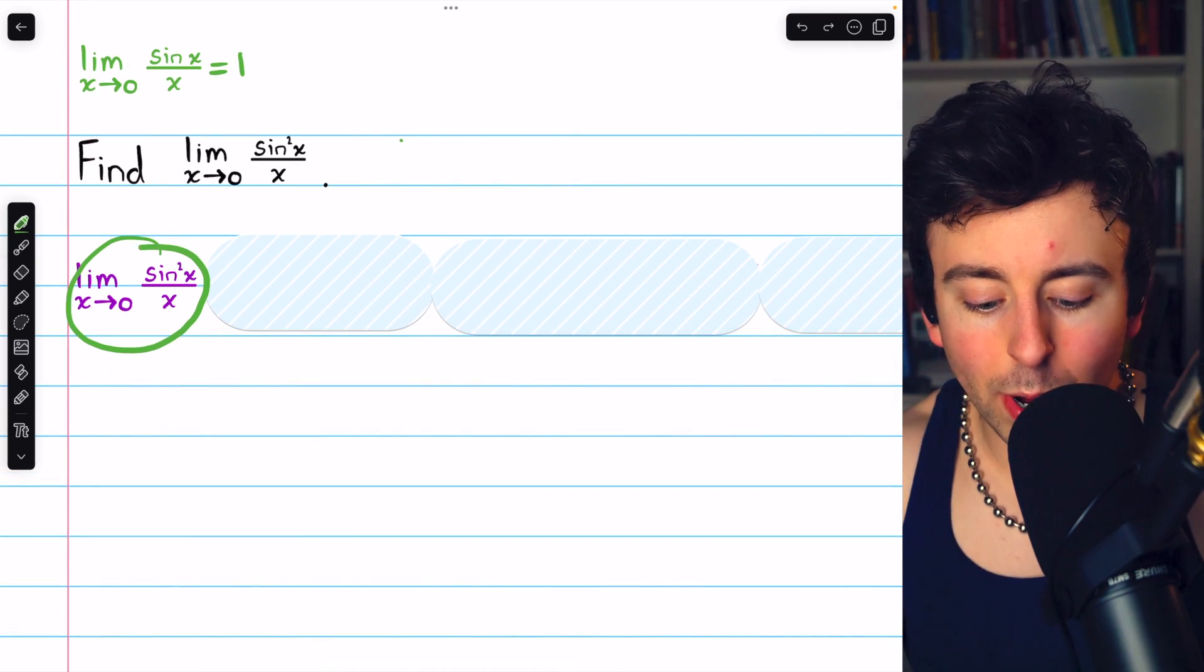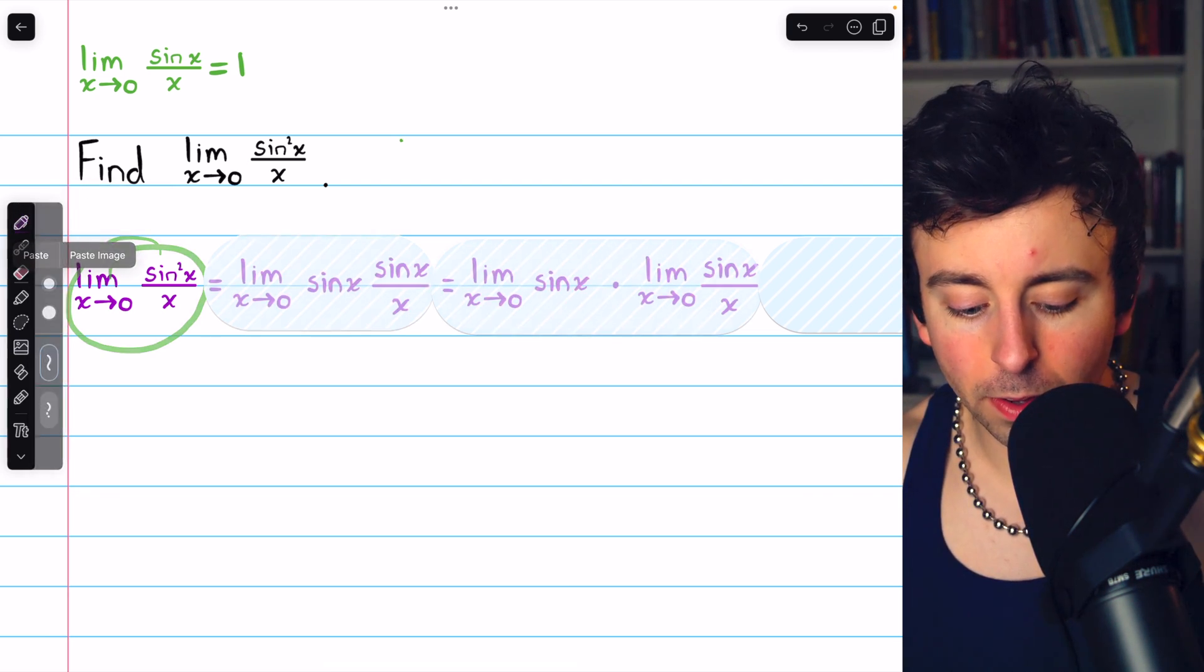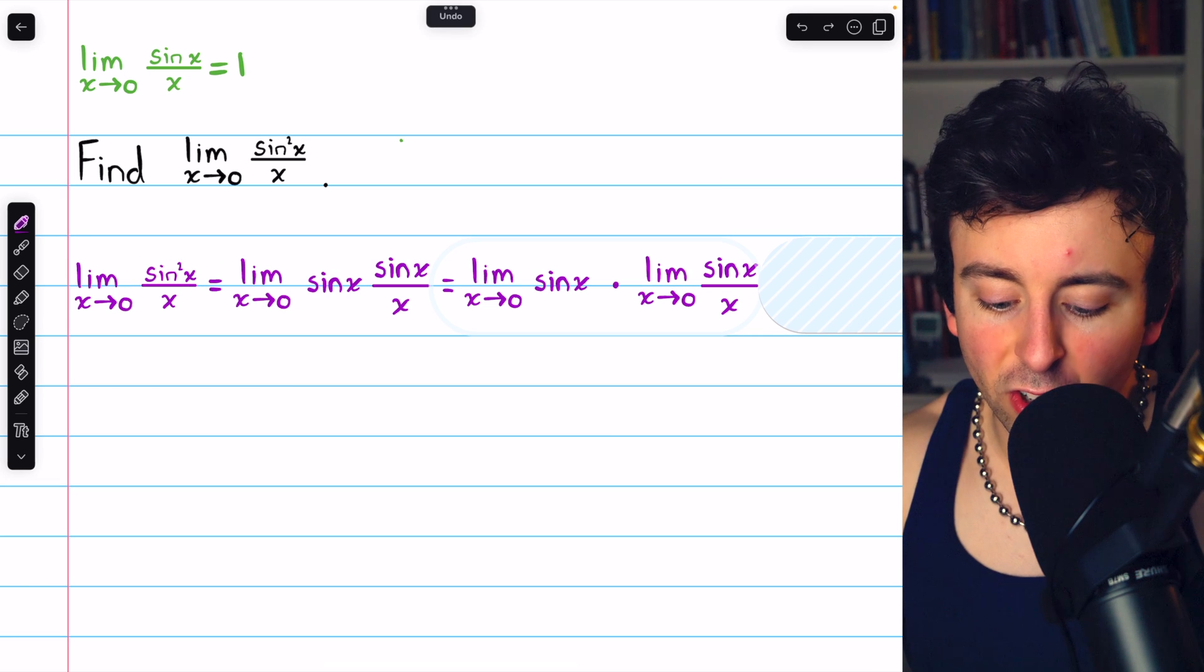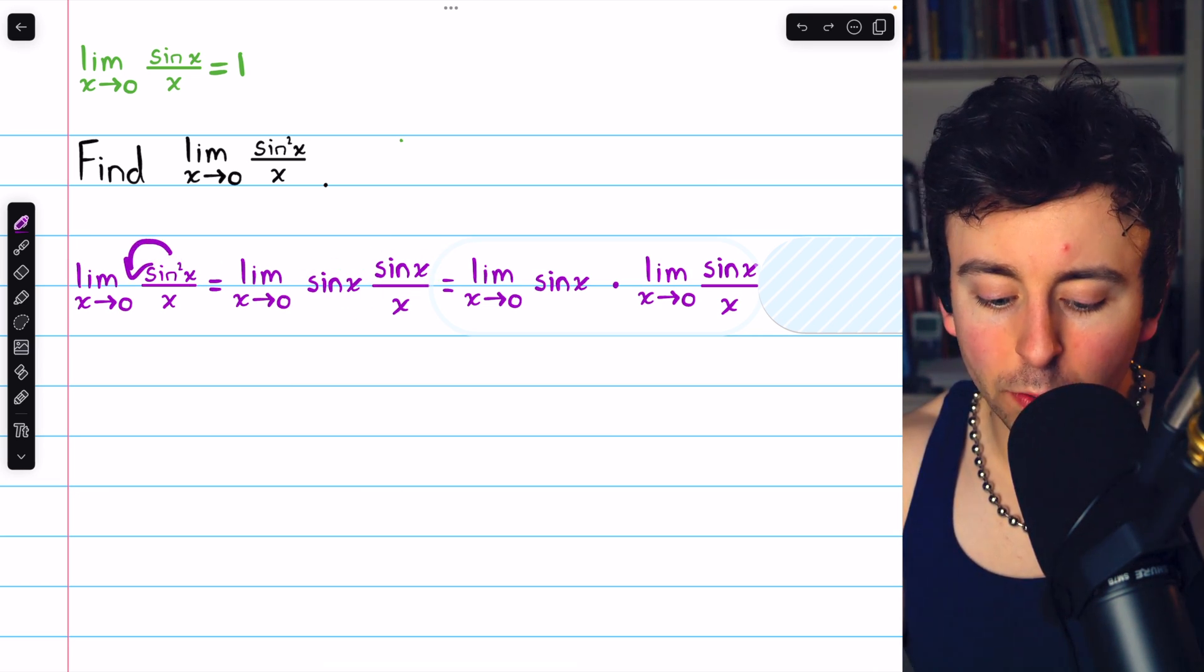we'll be able to evaluate this limit with sine squared by just splitting it up using the limit product rule. Sine squared of x is just sine x times sine x. So just take a factor of sine x out of the fraction, and we have this product.